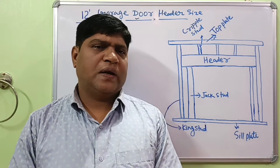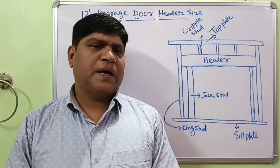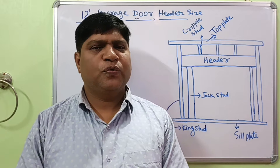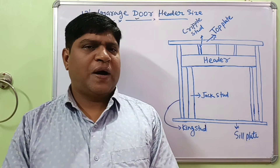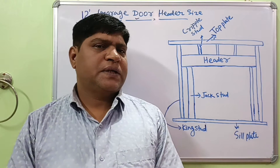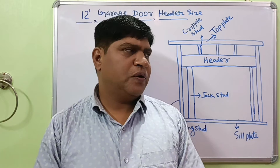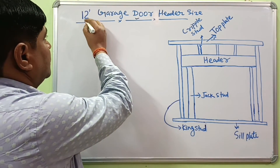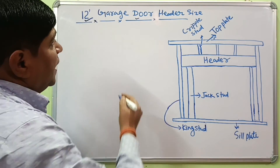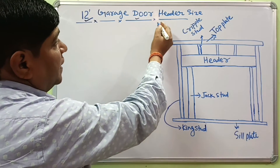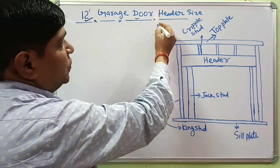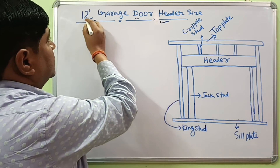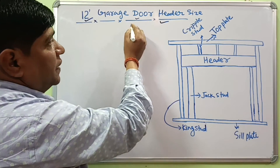Hi guys, welcome to our YouTube channel. Today in this video we are talking about what will be the size of a garage door header if the width of the garage door is about 12 foot, and what will be the rough opening. In this video we have to find out the correct header size for a 12-foot garage door.